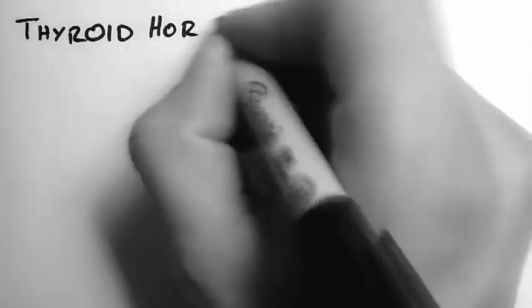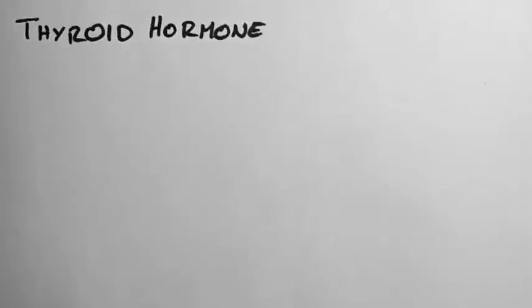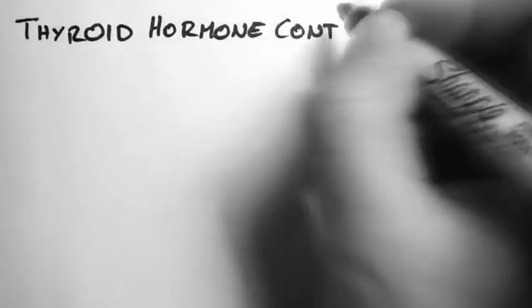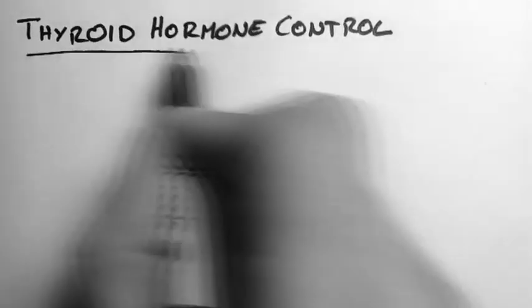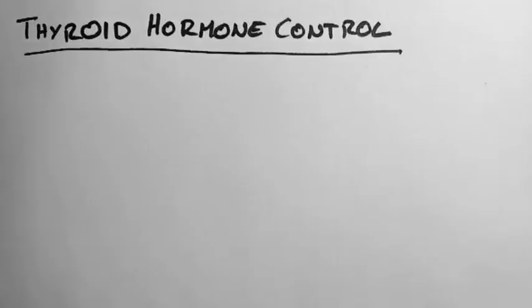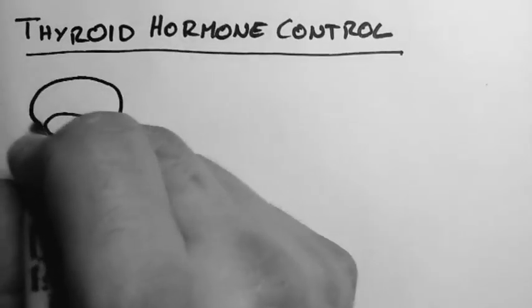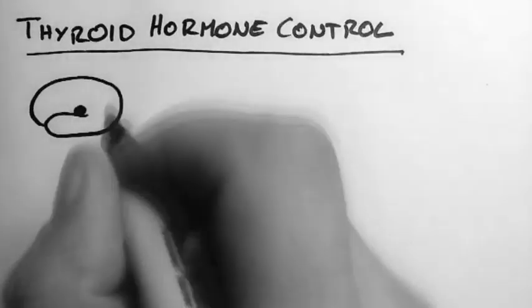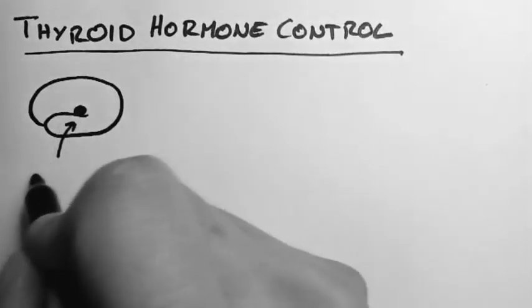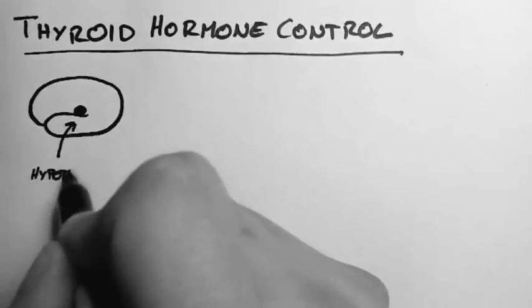In this video I'm going to talk about thyroid hormone control. The first player in this mechanism is the hypothalamus, and it sits just in the middle of the brain like this, right in the very center.